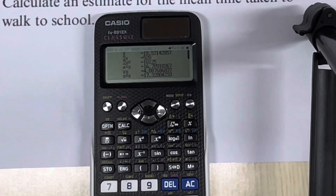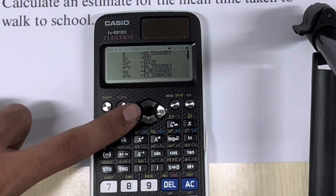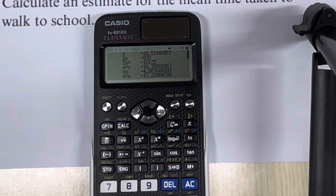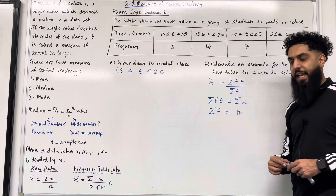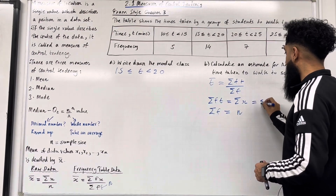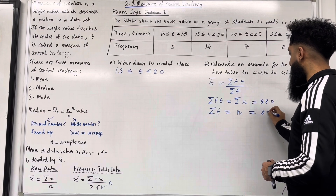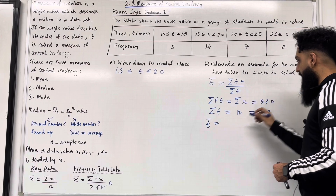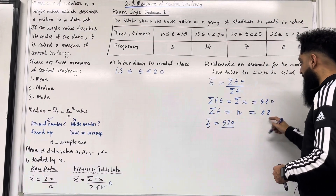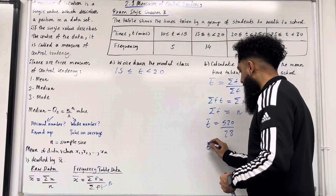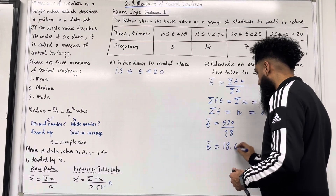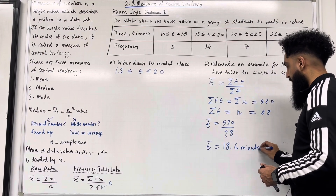The calculator gives sum of X equal to 520 and N equal to 28. X bar, the mean time, is 18.57142857. So T bar, the mean time taken, is equal to 520 divided by 28, which gives 18.6 minutes to 3 significant figures.